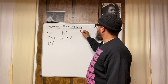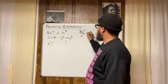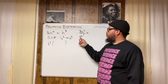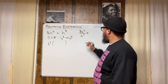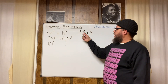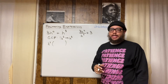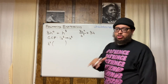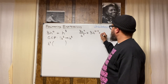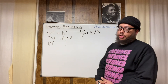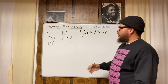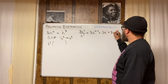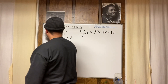Take the first term: 3h to the fourth divided by h to the third. Look at your coefficients — that's a three and an invisible one. Three divided by one is just three. Then you've got h to the fourth divided by h to the third. Using the division rule for exponents, you write the variable one time and subtract the exponents: four minus three equals one, giving you h to the first. Since an exponent of one isn't necessary to write, you get three h. Put that three h inside the parentheses.